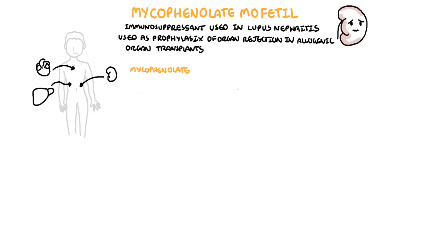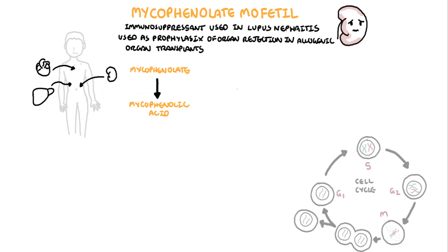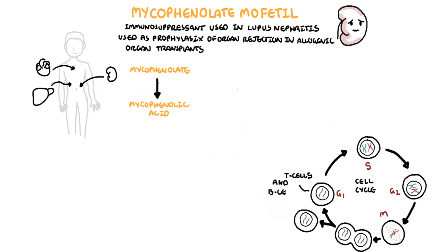The active metabolite of mycophenolate, mycophenolic acid, prevents T-cell and B-cell proliferation and the production of cytotoxic T-cells and antibodies. Thus, mycophenolate causes arrest of the cells at the cell cycle, because this is how T and B-cells proliferate. So how does mycophenolate actually disrupt the cell cycle?